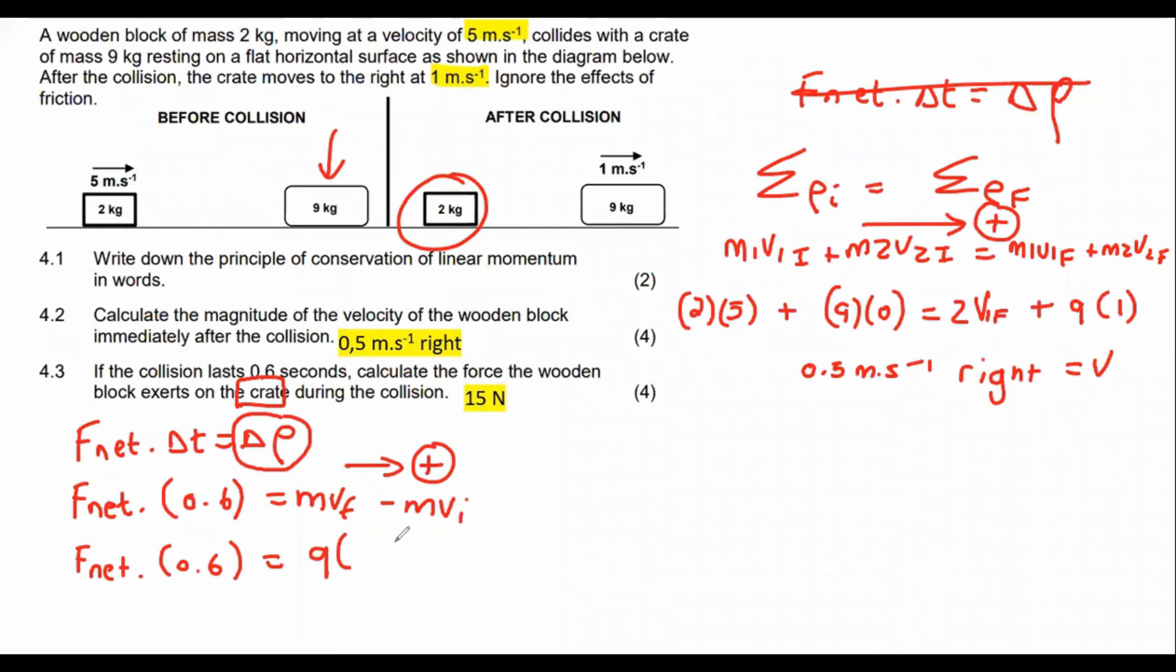And it had a final velocity of 1 meters per second minus the mass of 9 and the initial velocity of that crate was 0. Then we can go calculate the net force acting on that crate. And we should end up with 15 newtons. And I should have actually said to the right because we chose right as positive and we just got a positive answer. And that's it, guys.